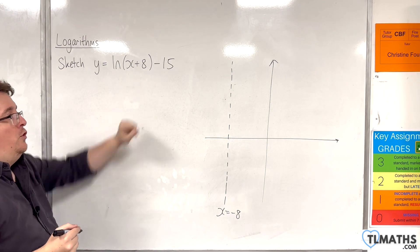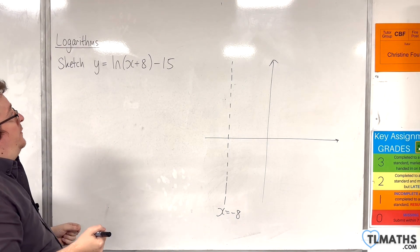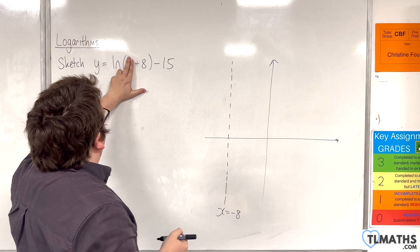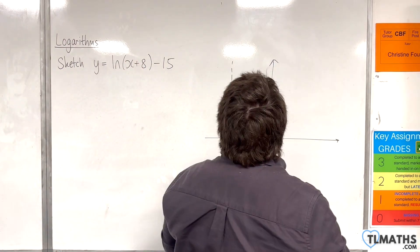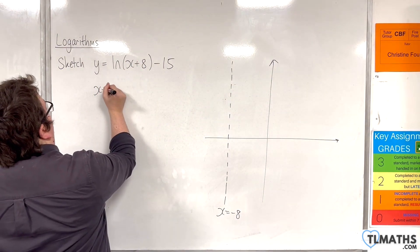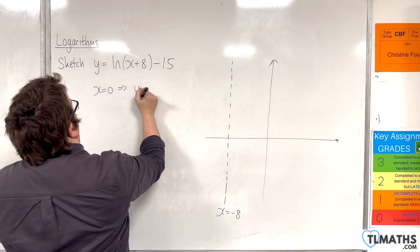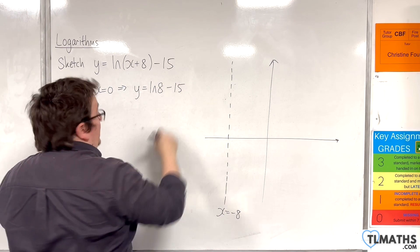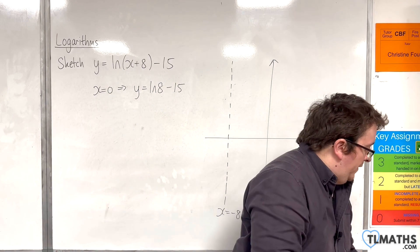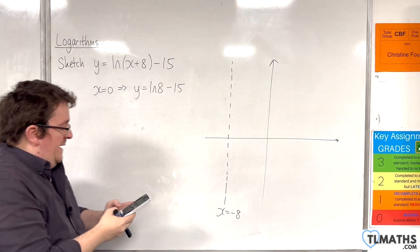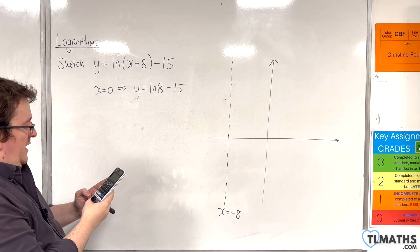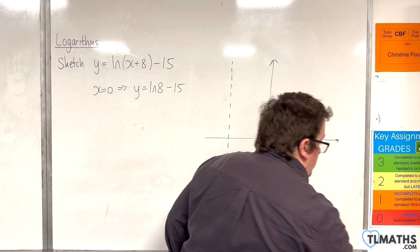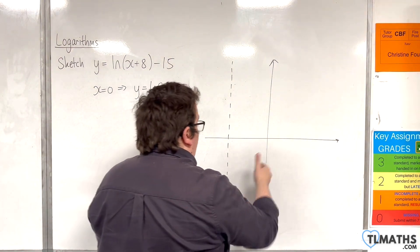Where is it crossing the y-axis? That will be when x is 0. So that's natural log of 8 take away 15. When x is 0, y equals natural log of 8 take away 15. Is it positive? Is it negative? Natural log of 8 take away 15 — so it's negative. It's minus 12.92.